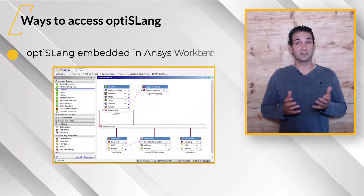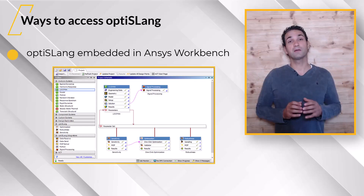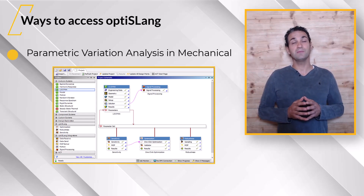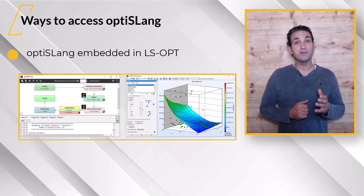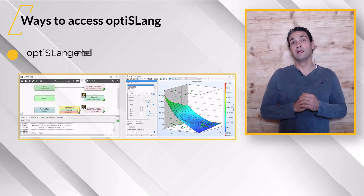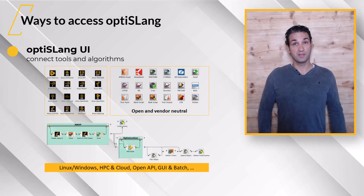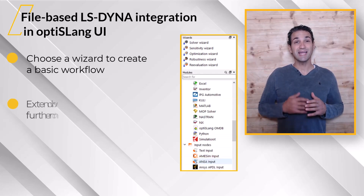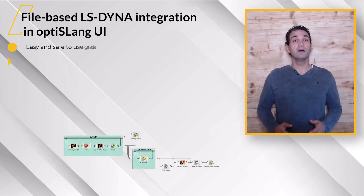An LS-Dyna simulation can be done in ANSYS Workbench, and thus you can use OptiSlang embedded inside Workbench, as for all other available solvers. How to use OptiSlang in that way will be explained in the course Parametric Variation and Analysis in Mechanical. Furthermore, you can use OptiSlang algorithms in LS-OPT so that experienced LS-OPT users can benefit from the advanced OptiSlang methods in the development environment they are accustomed to. But in this course, you will learn about the file-based integration of LS-Dyna simulation in the OptiSlang user interface. With this option, you will have the most benefit. You can apply OptiSlang wizards to create a basic workflow and extend it to a complex one by easy and safe-to-use graphical grid programming. Finally, you can apply all OptiSlang algorithms.